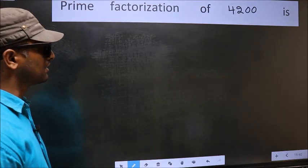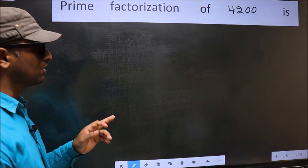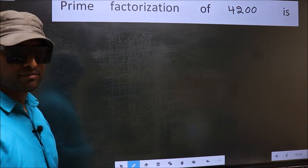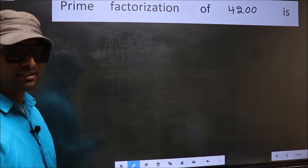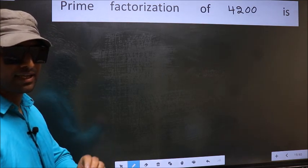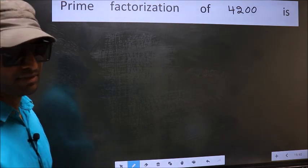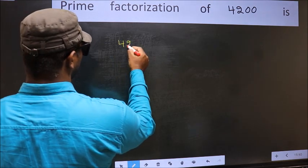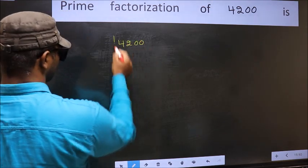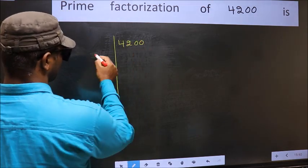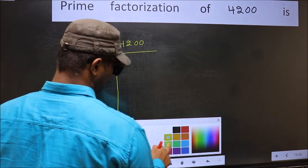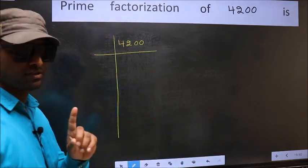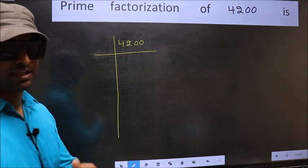Prime factorization of 4200. To do prime factorization, first we should frame it in this way. 4200. This is step 1.